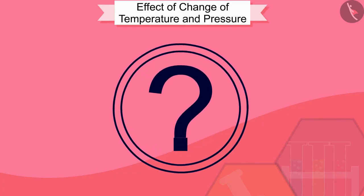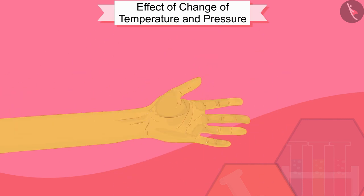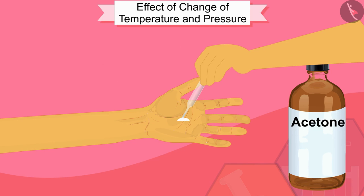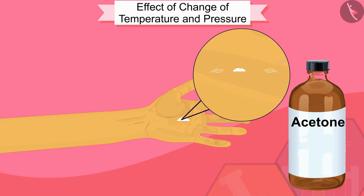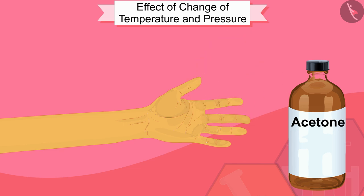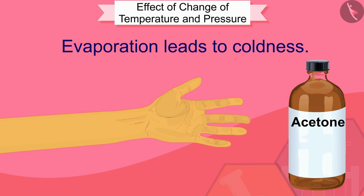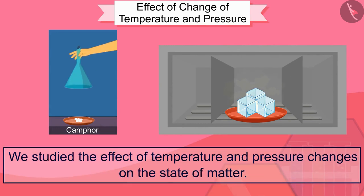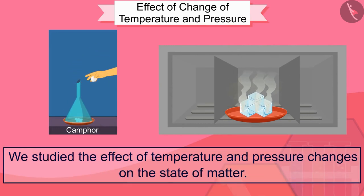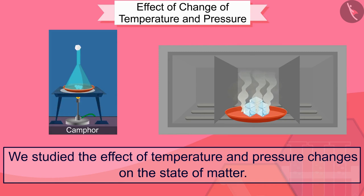Do you know another interesting thing about evaporation? Have you ever poured a few drops of acetone on your palm? You must have felt cold on the palm — this is also caused by evaporation. Acetone particles receive energy from your palm and its surroundings and evaporate, because of which you feel coldness on the palm. In this way we can see that evaporation leads to coolness. In this video we studied the effect of temperature and pressure changes on the state of matter.